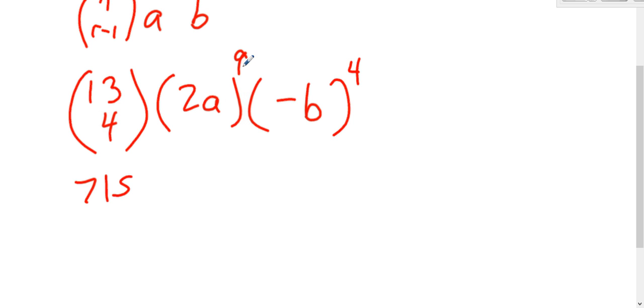2 to the 9th, a to the 9th. So 2 to the 9th, that's also a big number. You might not know that. You could probably figure it out. I think it's 512. But without a calculator, you might struggle with that, but that's okay too, because that won't matter.